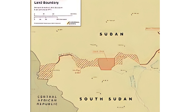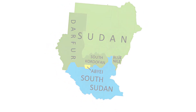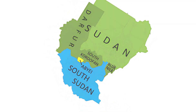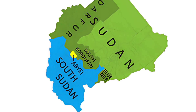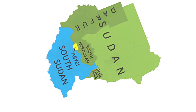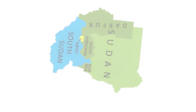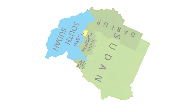Marginalization and discrimination: one of the primary catalysts for South Sudan's secession was the marginalization and discrimination faced by its people under Sudanese rule. The predominantly Christian and animist population of South Sudan, largely composed of African ethnic groups such as the Dinka, Nuer, and Shilluk, faced systemic discrimination and oppression by the Arab-dominated government in Khartoum.